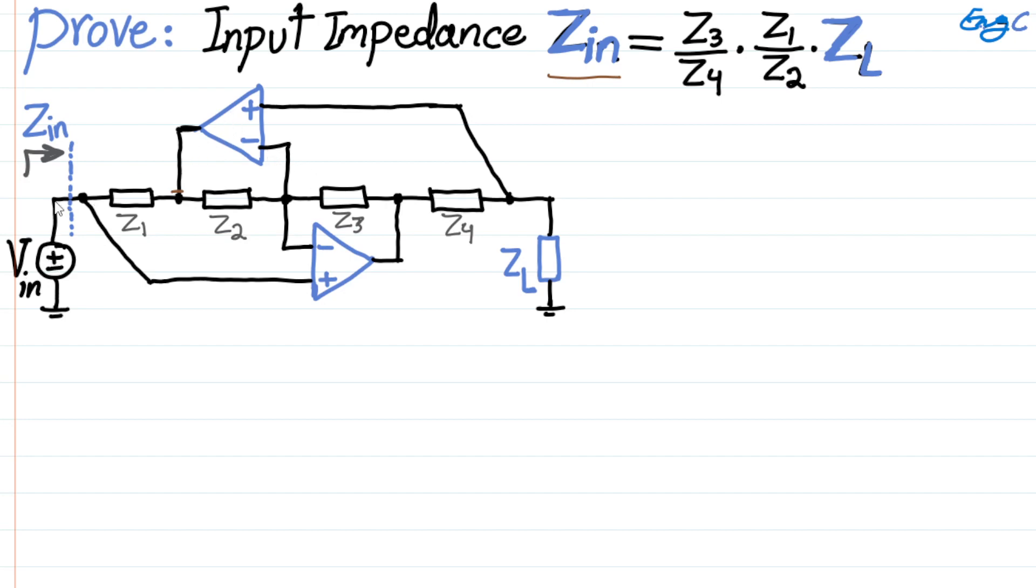Vin comes in at input, goes to the positive input terminal, so Vin appears here. Assuming that op-amp 2 is properly biased, so supply voltages are properly there, and assuming this ideal op-amp is in linear region of operation, meaning that negative feedback is dominant, then because of that, it's not saturated, virtual short is valid, V plus should be equal to V minus for the two input terminals of the op-amp. If Vin is appearing at the positive input terminal, Vin should be at negative input terminal as well.